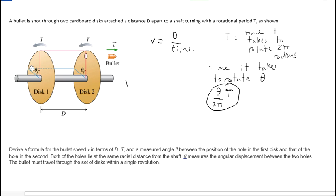Therefore, the velocity of this bullet is distance d all over theta over 2π times T. And if we simplify that, this fraction will flip. When you divide by a fraction, you multiply by the reciprocal. So we end up with 2π times d, that distance, all over theta times T.